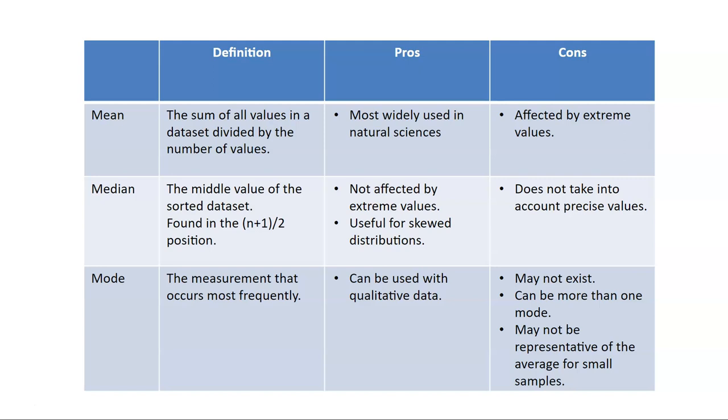The mean is just all the values summed in a data set divided by the number of values, and this is really widely used. The problem is that it's affected by extreme values. So you can have lots of small data points and then only a few large sized data points, and those large sized data points are going to influence the mean for your entire data set.